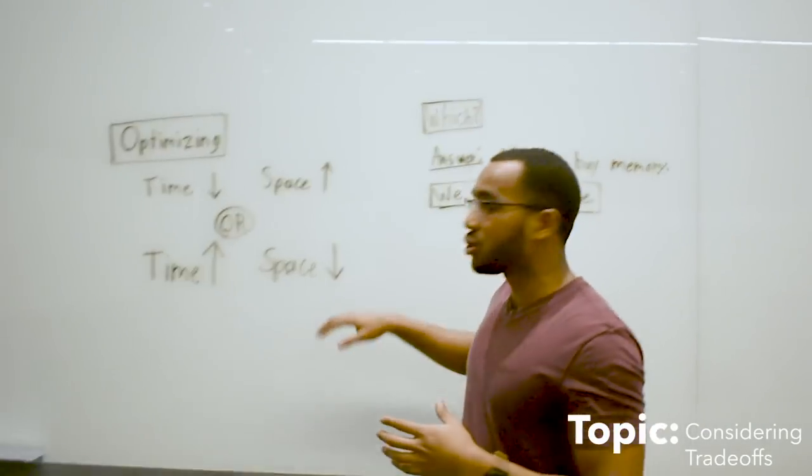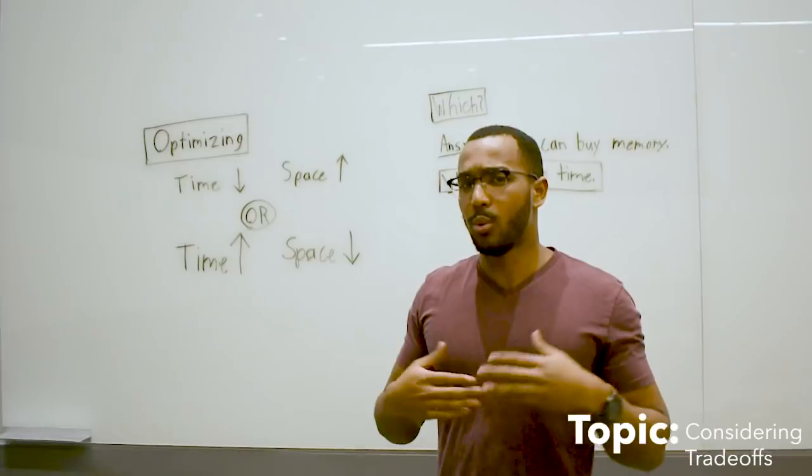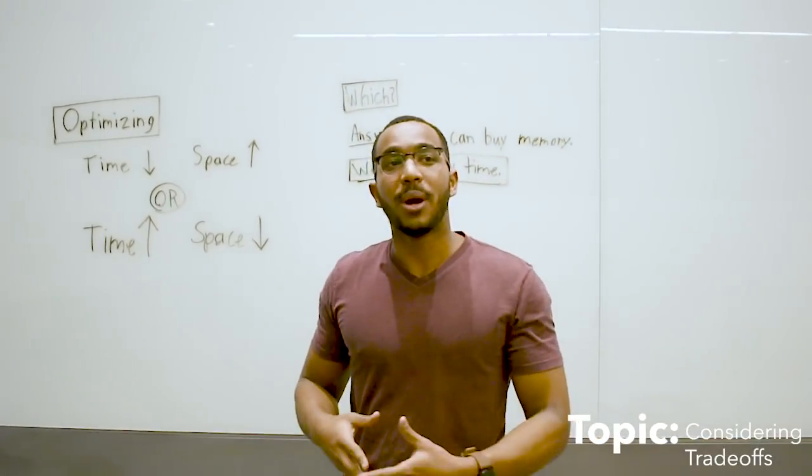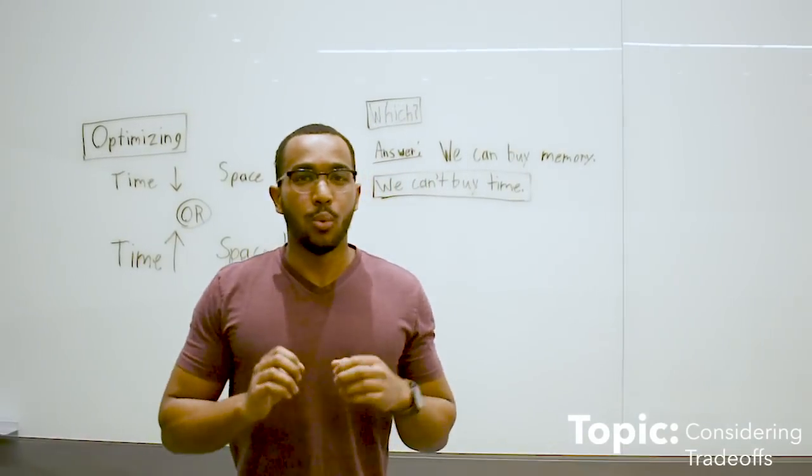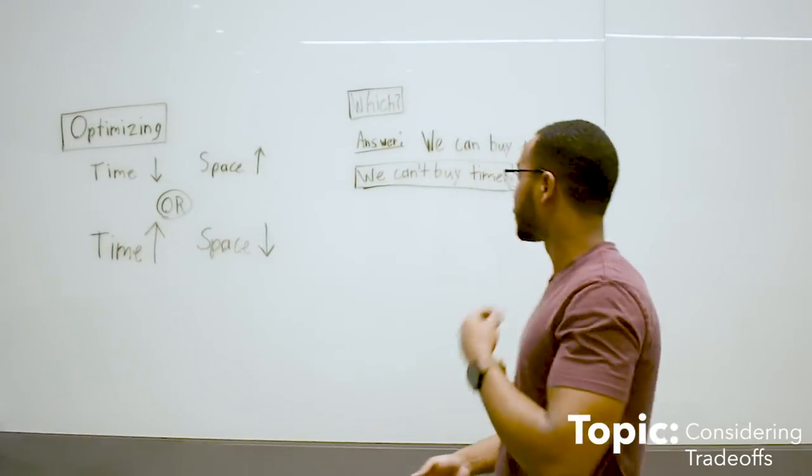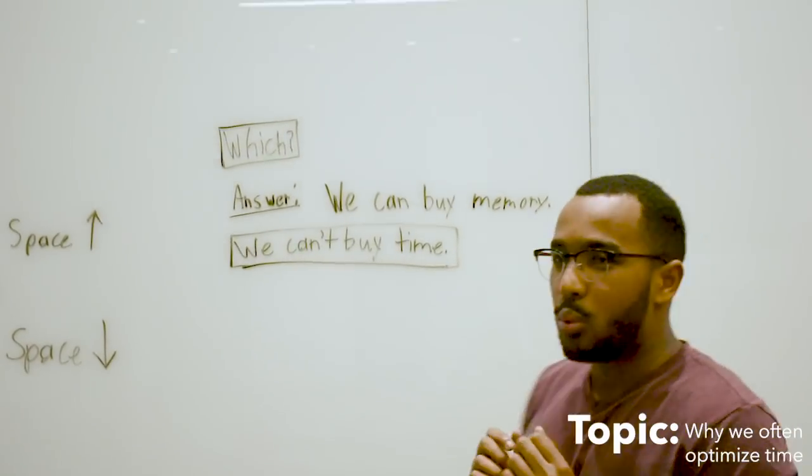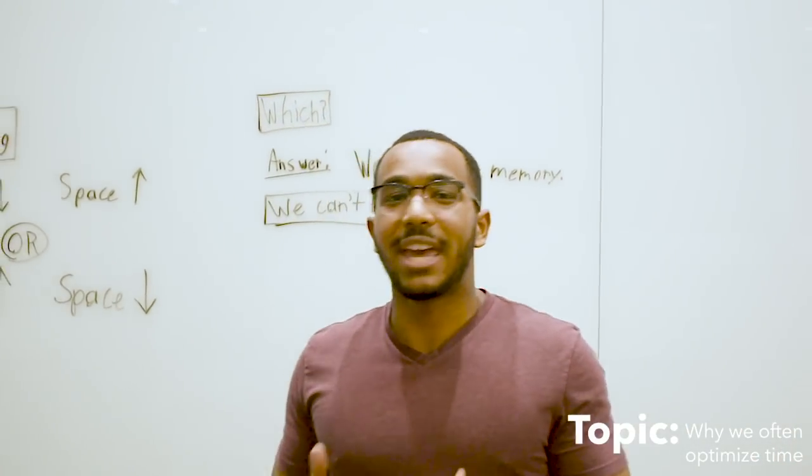Then you can lower how fast your algorithm runs because you know more about the array you're working on. You can also increase the time complexity but lower the space. So which one is better? Which one makes more sense?